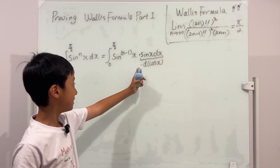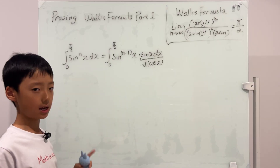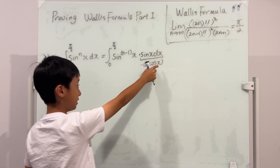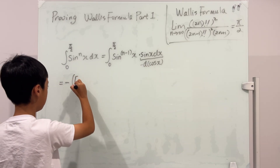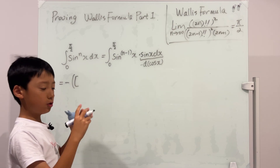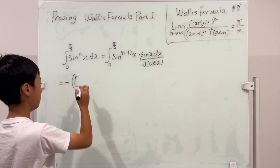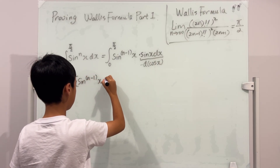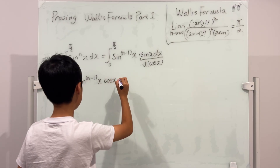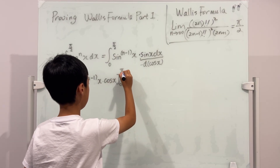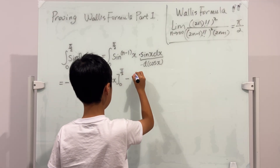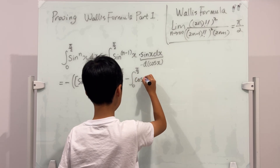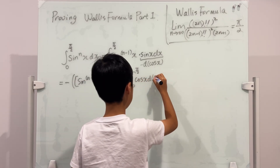This is the u and this is the dv. We multiply them together, and of course don't forget to evaluate from 0 to π/2. So it's sine^(n−1)(x) times cosine(x), evaluated from 0 to π/2. And then minus the integral from 0 to π/2 of cosine x times d(sine^(n−1) x).